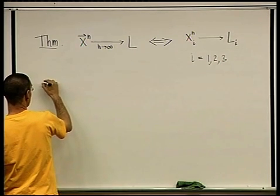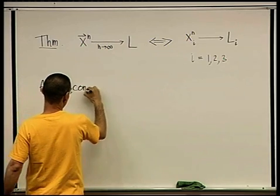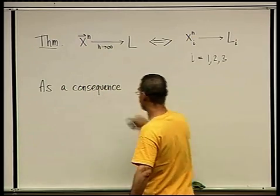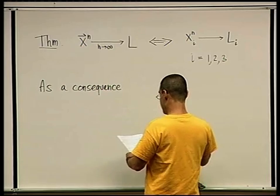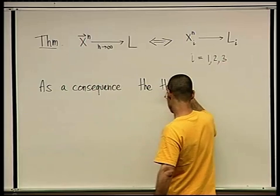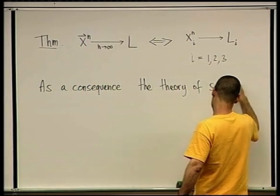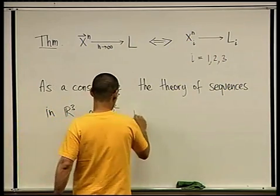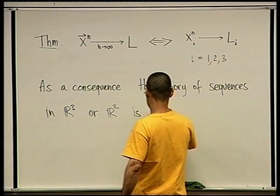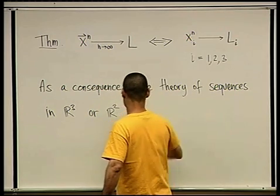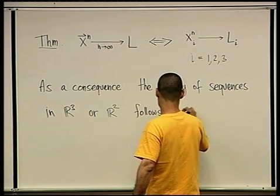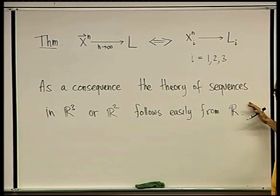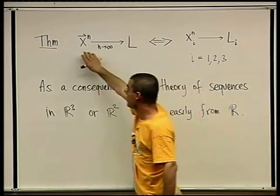So as a consequence, I didn't mean for that to happen, but it's a good word to use in the chapter on sequences. As a consequence, the theory of sequences in R3 or R2 follows easily from R. Do you understand what I mean? So you don't have to do anything magical to check if a sequence of points in 3 space converges. You just take the components, see if it converges component-wise, and that's it.